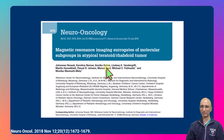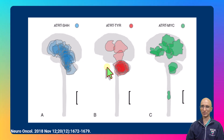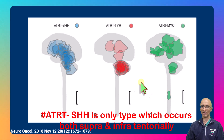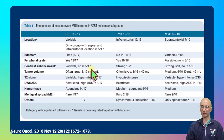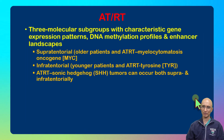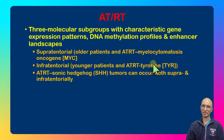Research has tried to identify molecular subgroups of ATRT based on imaging. There are three types: sonic hedgehog type, tyrosine type, and MYC type. MYC type is the only one in which ATRT can occur in the spinal cord, whereas sonic hedgehog type is the only type which can also occur supratentorially. Based on genetic expression, DNA methylation, and enhancement pattern, these three subtypes have distinct characteristics.